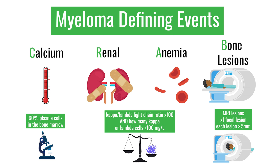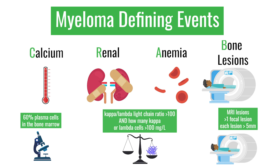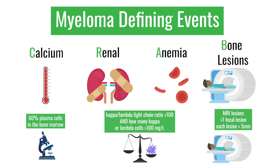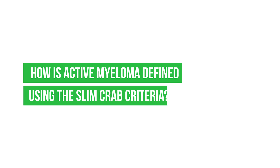The final myeloma defining event is MRI lesions. On MRI, features differ from bone x-ray findings. If more than one focal lesion is seen in a myeloma patient on MRI, each measuring five millimeters or more, it is considered a myeloma defining event. In summary, we have the CRAB criteria plus these three myeloma defining events: 60% clonal plasma cells, involved-to-uninvolved light chain ratio greater than 100, and more than one focal lesion on MRI.